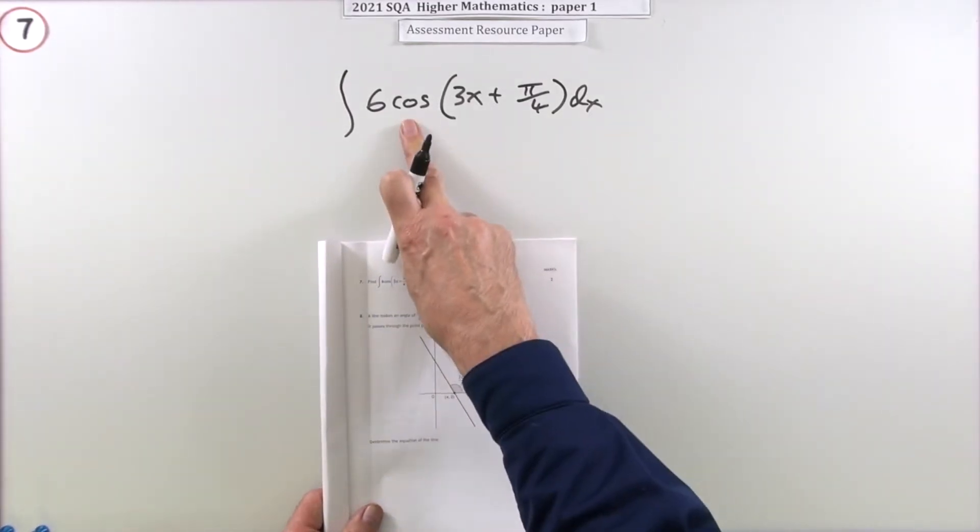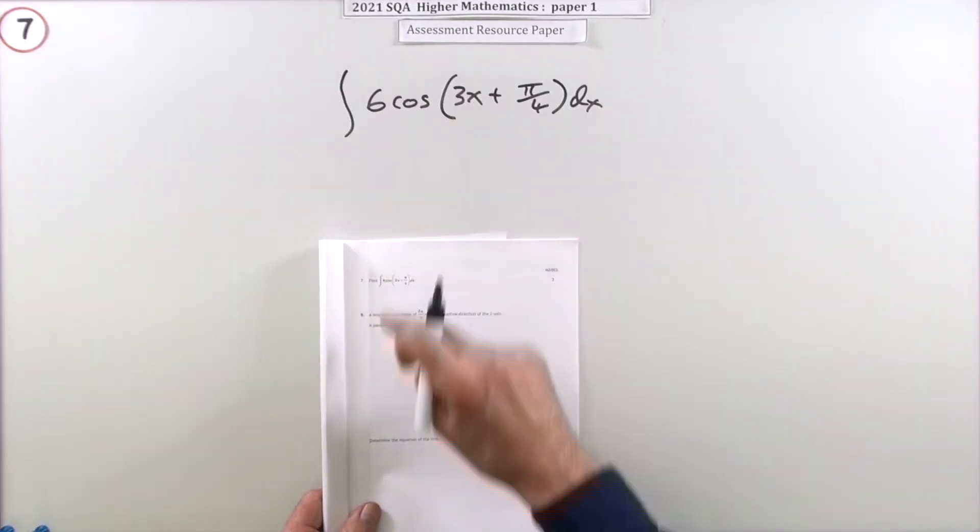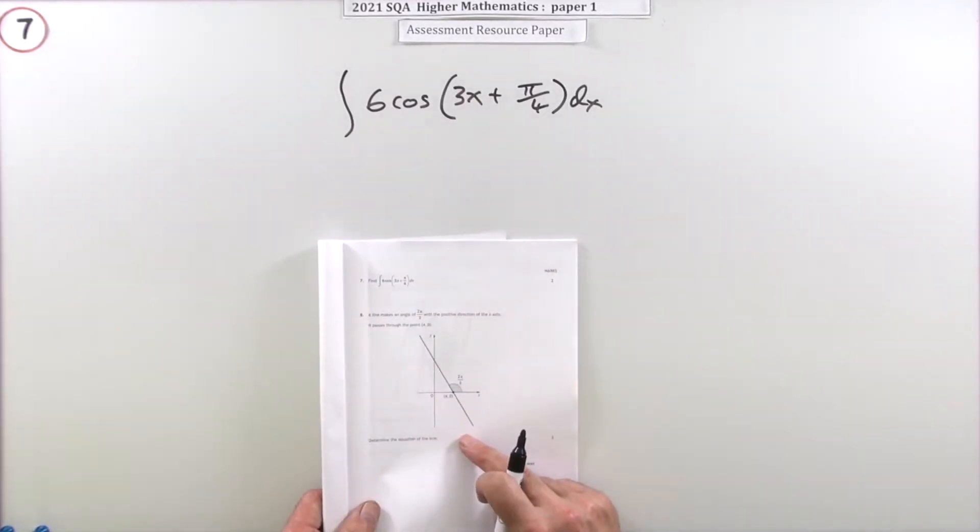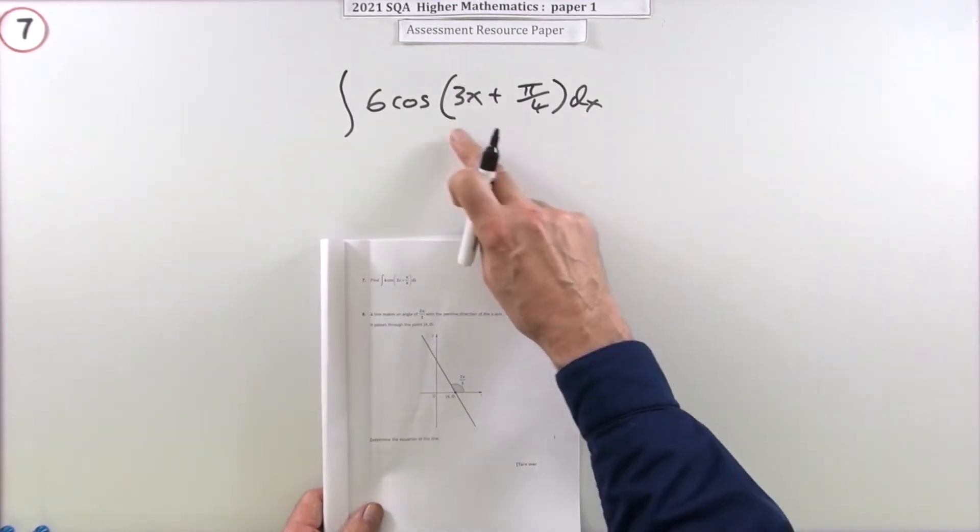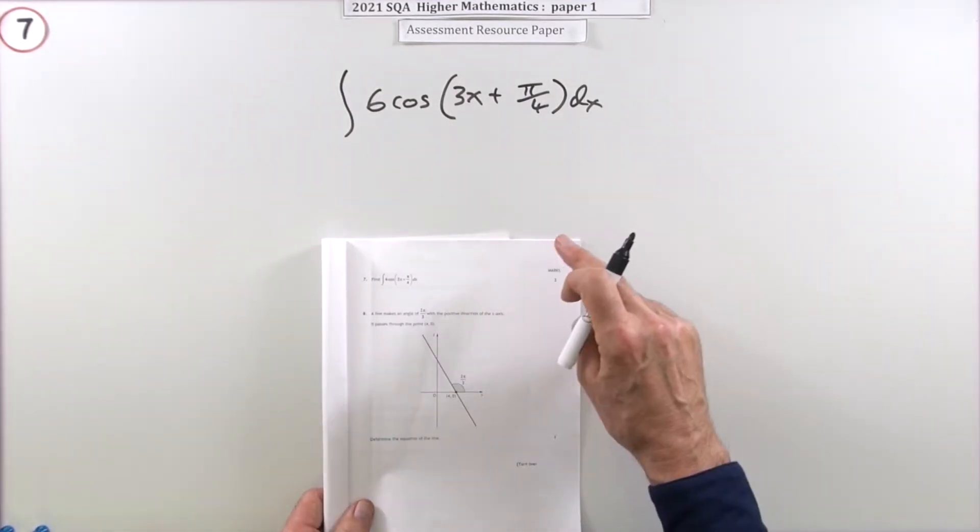It's a trig one, but they're quite easy because you've only got two possibilities for that. It's either going to be sine or cos, but more significantly it's a function of a function. There's something inside the bracket there.